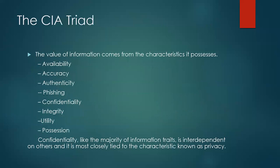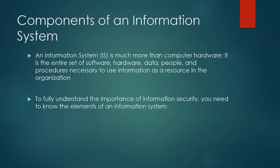The value of information comes from the characteristics it possesses: availability, accuracy, authenticity, confidentiality, integrity, utility, and possession. Confidentiality means that the majority of information is interdependent on others and is most likely tied to the characteristic known as privacy. These form the components of an information system.